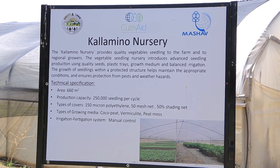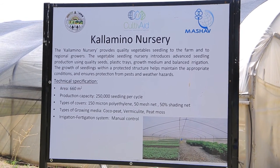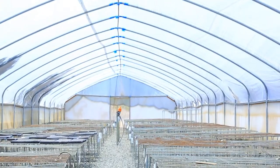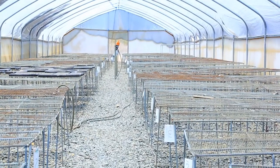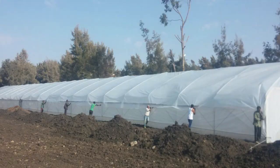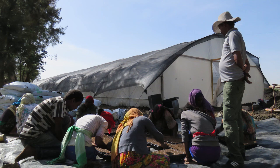First of all I will explain about the structure of the greenhouse. This greenhouse uses different materials to install, like mesh shading nets, polyethylene plastic, and 50 mesh nets.